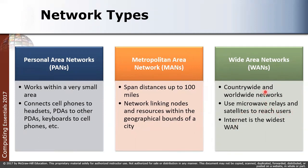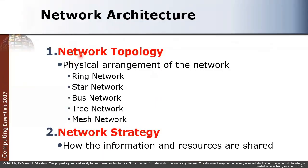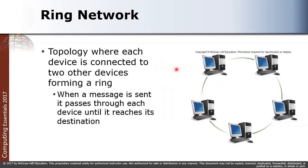When we talk about network architecture, we discuss topology and strategy. Under network topology there are several types: ring, star, bus, tree, and mesh networks. Network strategy refers to how information and resources are shared. The most commonly used network topologies today are star, tree, and mesh.